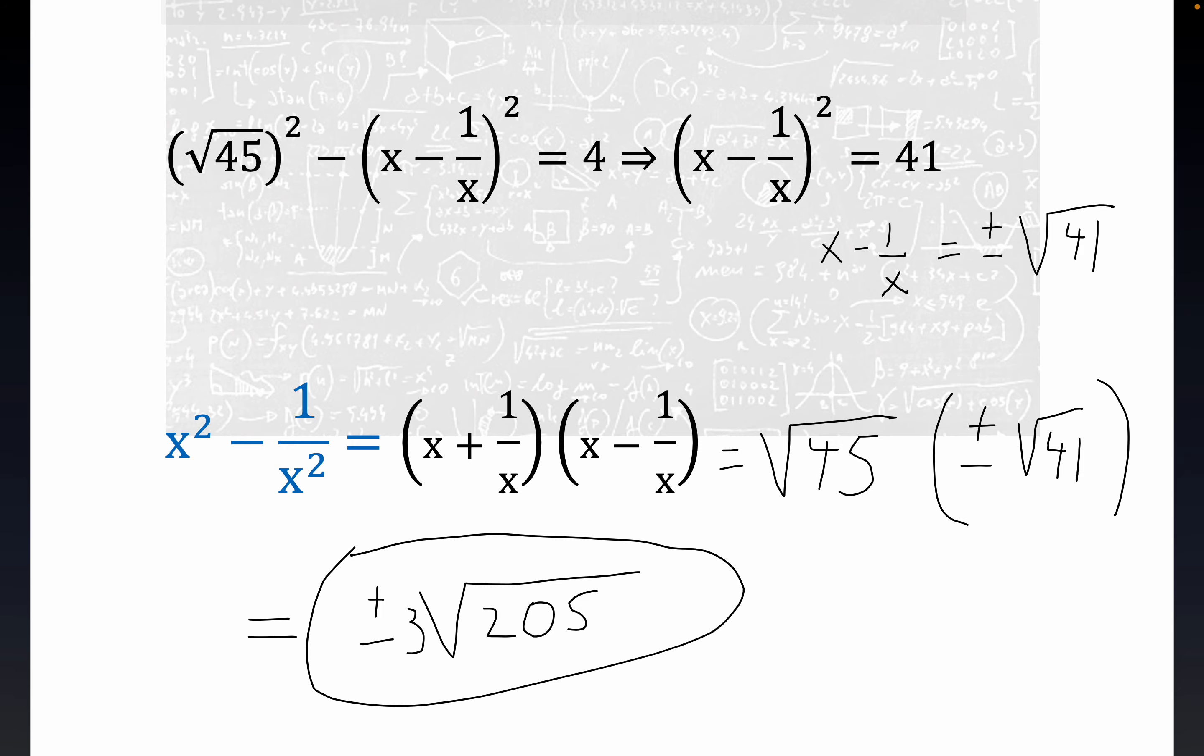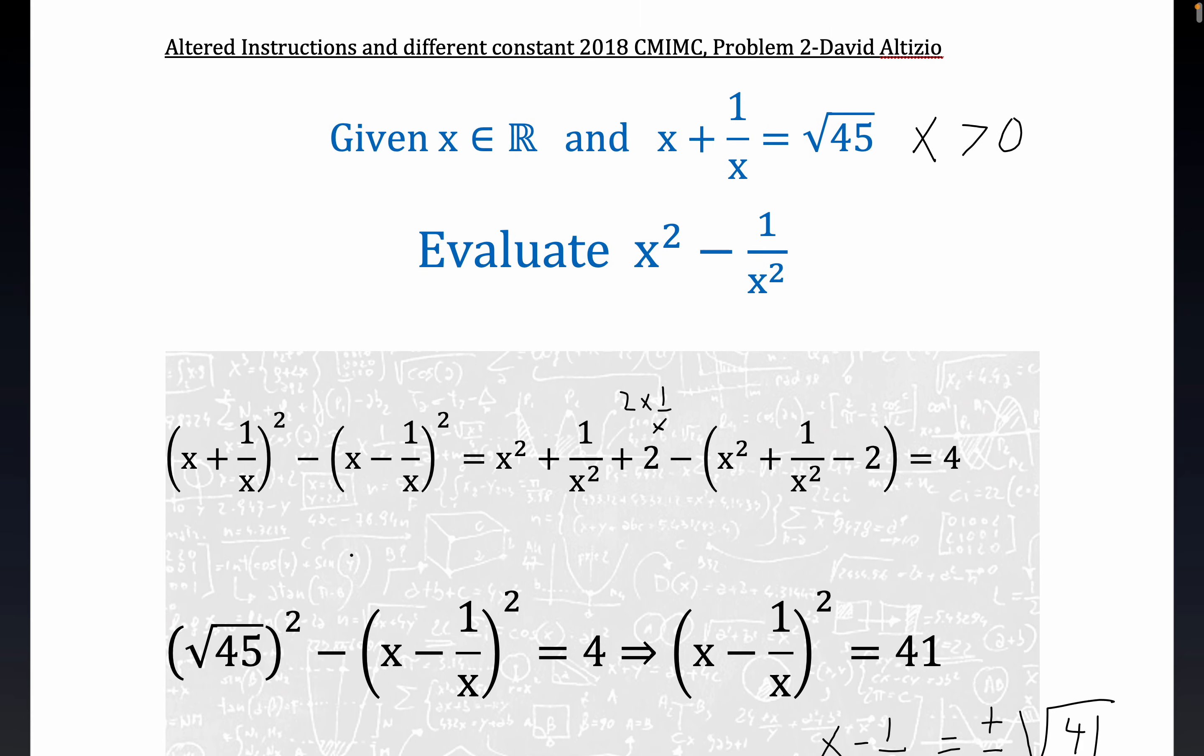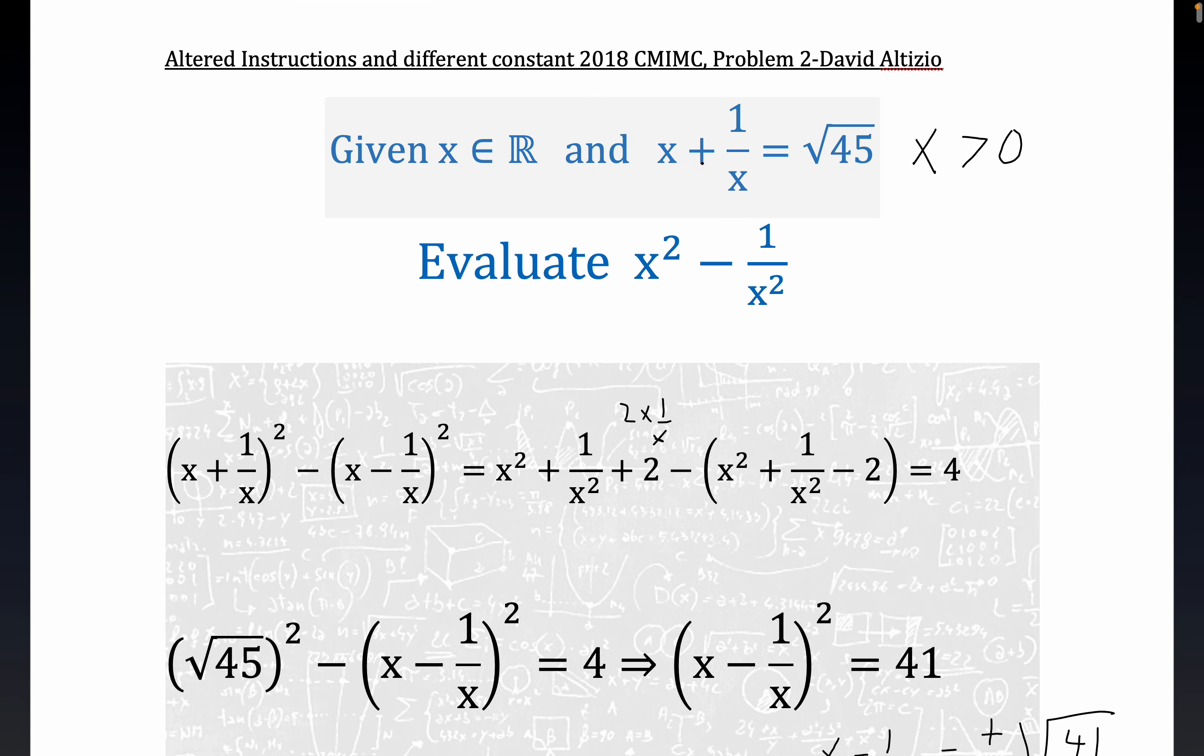And again, I might not have, this reduces to a quadratic. It may not be clear. Maybe you can have a plus. No, this is x has to be positive, right? You can't have a negative x. I don't know what I was thinking. So x definitely has to be positive. And if you multiply it through by x, you see you get a quadratic right here. You would get x squared minus root 45 x.